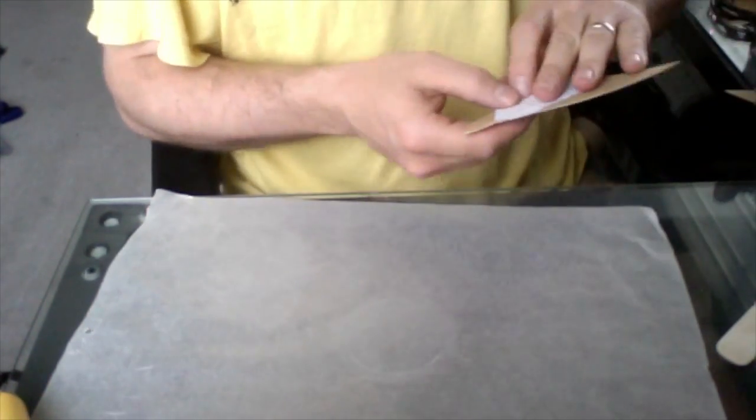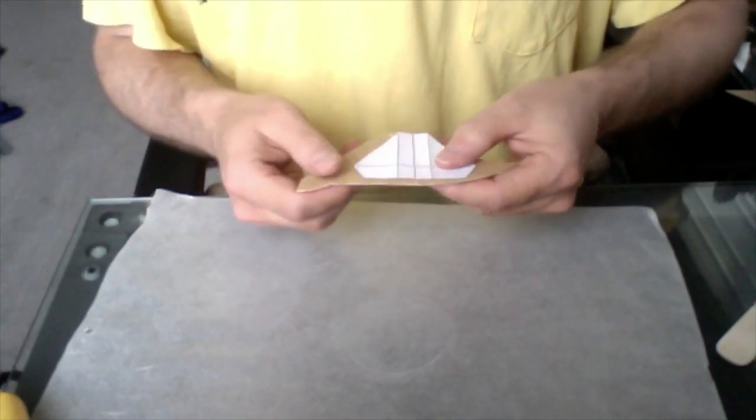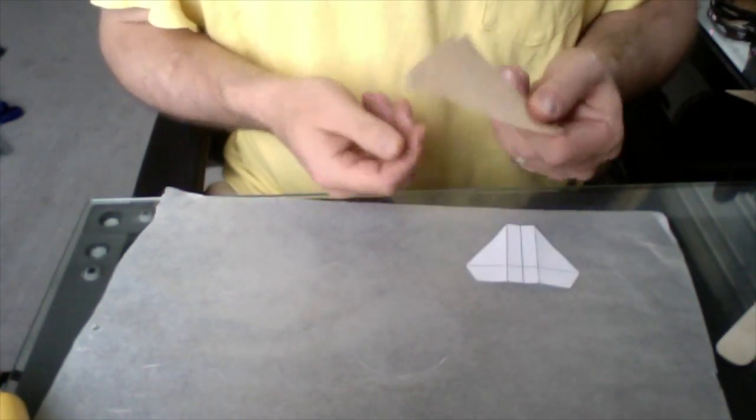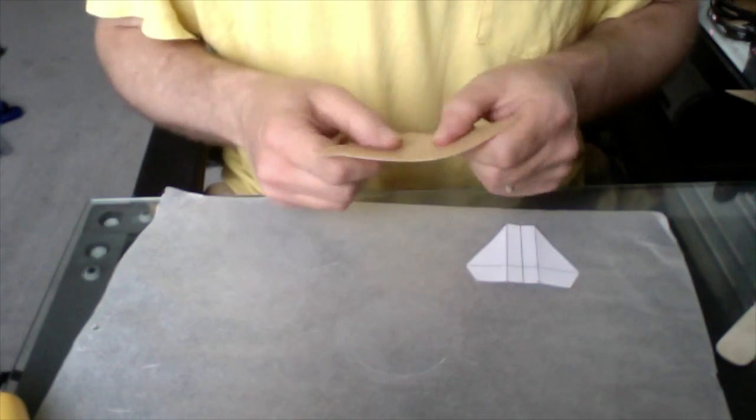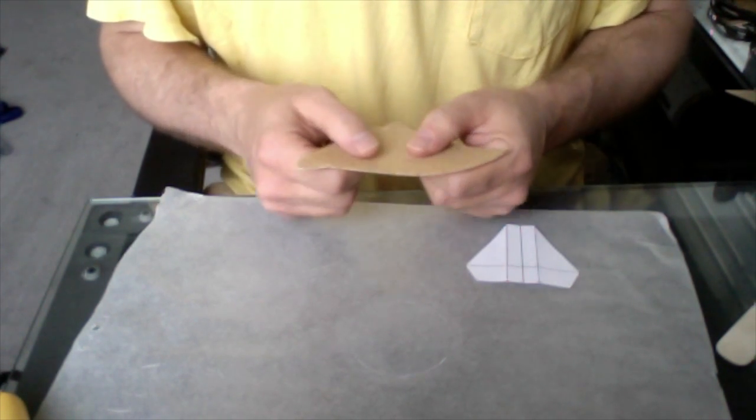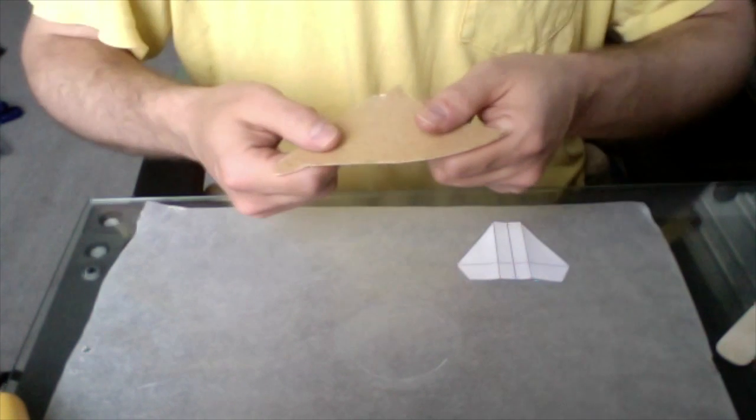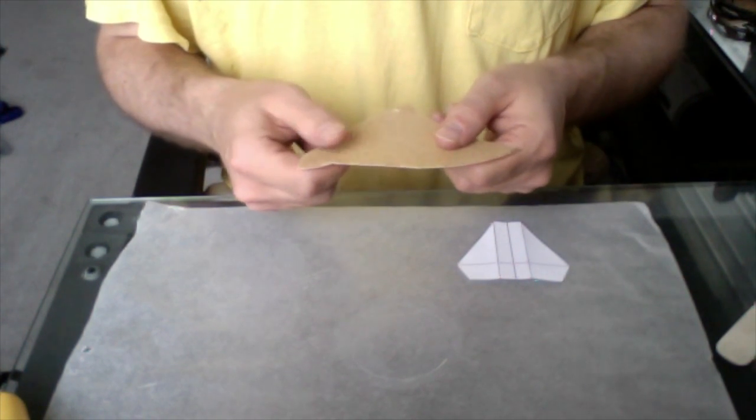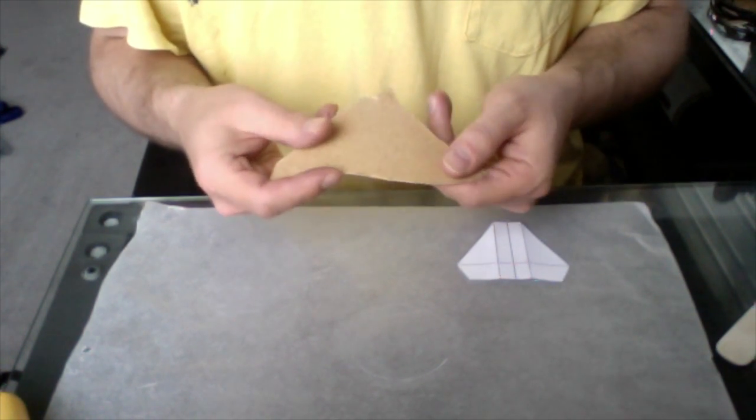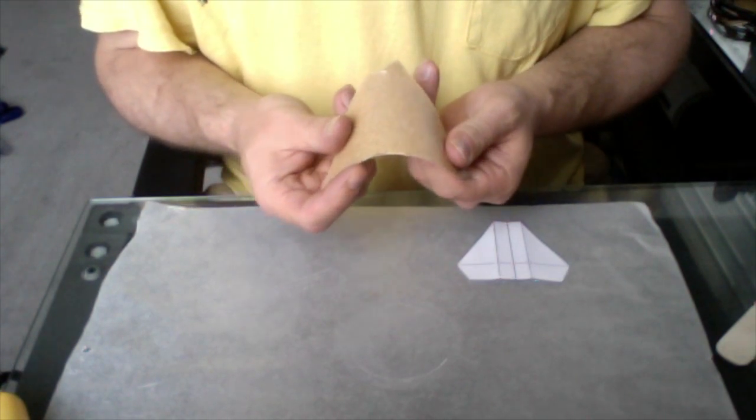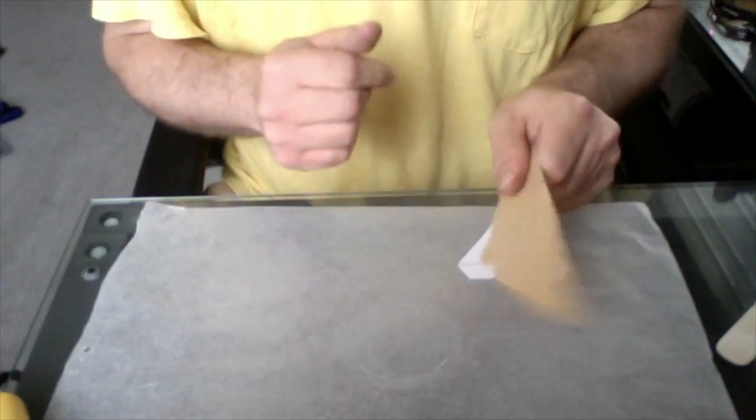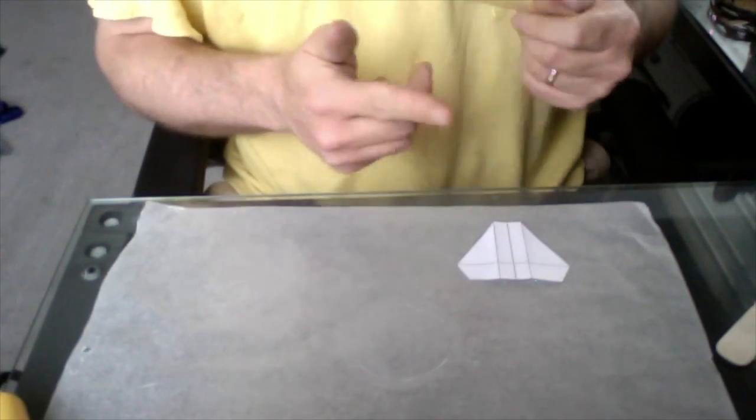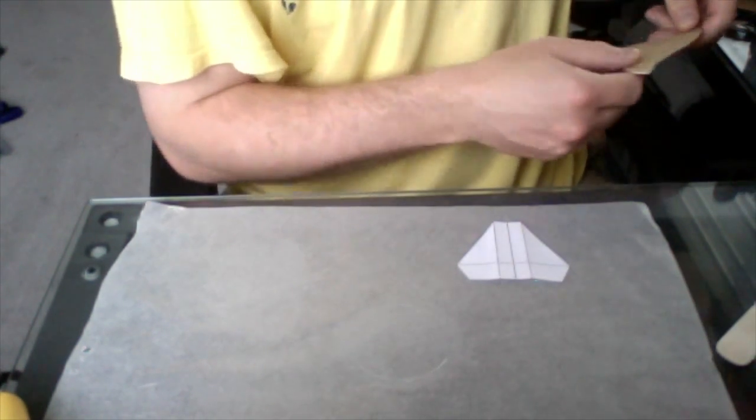So Worbla is a thermoplastic that will hold its shape after you heat it. Right now you can see this just kind of wiggles around, doesn't do anything. But after you heat it and form it, it'll hold its shape.